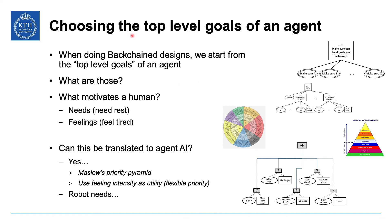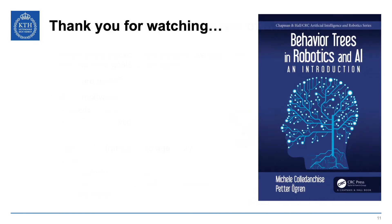To summarize: when choosing the top-level goals of an agent in a backchain design, we can be inspired by what motivates humans — feelings, Maslow's needs, and other lists of needs. We can look at Maslow's priority pyramid of needs. If we have lots of needs and a fixed priority doesn't make sense, we can use feeling intensity as utility to have a flexible priority. Or we can look at the five suggested robot needs from the paper by the Georgia team. Thank you for watching.